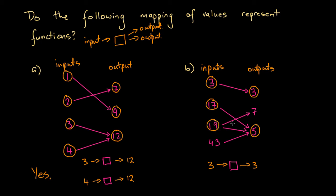But if we consider input 19, there are two arrows coming out of it, which means 19 as an input is associated with either output 7 or output 5. In other words, substituting 19 into this mapping doesn't give us a single value — it gives us two different values. A function cannot have this property, so this mapping is not a function.